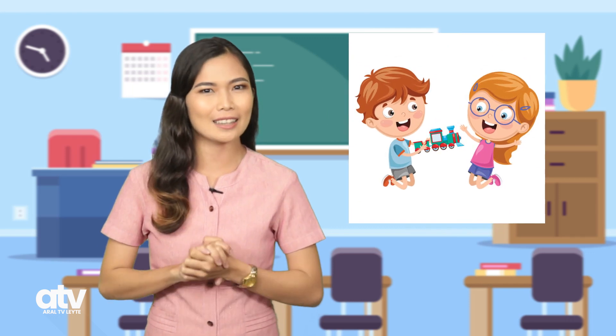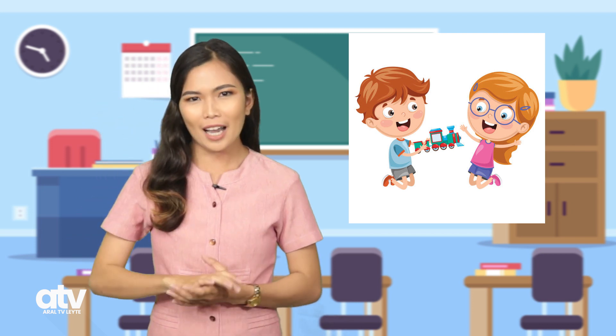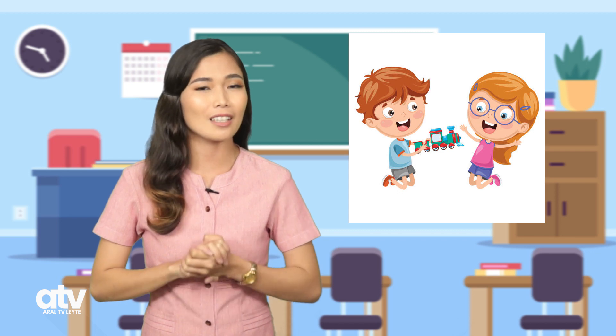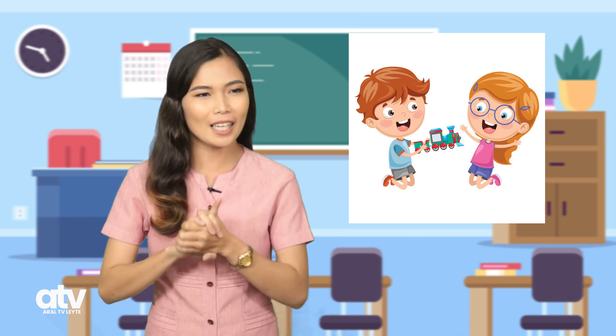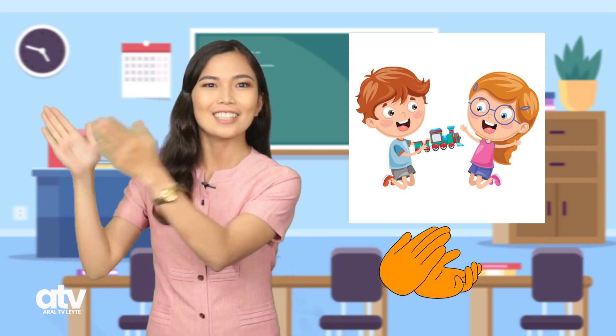Pumunta naman tayo sa pangapat na larawan. Ang pangapat na larawan naman ay nagpapakita ng isang nakakatandang kapatid na ibinibigay ang kanyang paboritong laruan sa kanyang nakababatang kapatid. Sa tingin ninyo, ito ba ay nagpapakita ng pagpapaubaya ng pansariling kapakanan para sa kabutihan ng kapwa? Oo naman! Ang ganyang kapatid ay dapat nating tularan at ito ay kahangahanga. Bigyan natin siya ng tatlong palakpak. Isa, dalawa, tatlo.